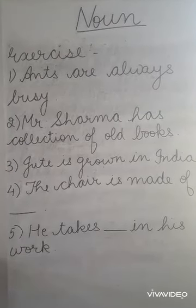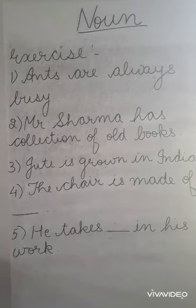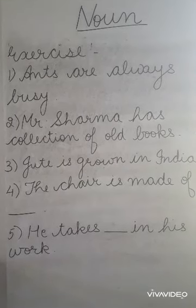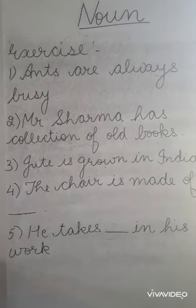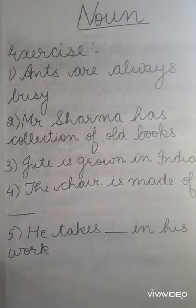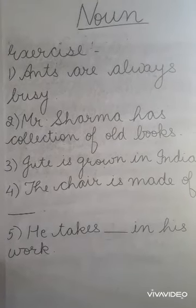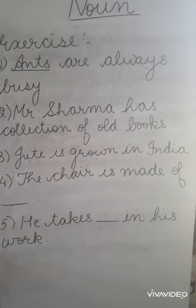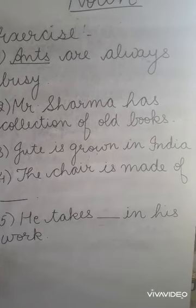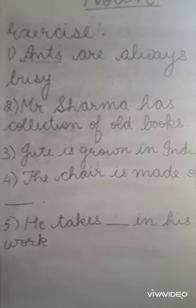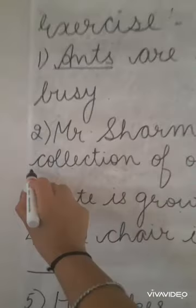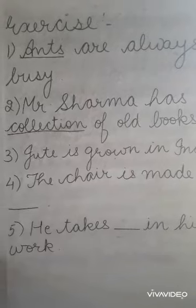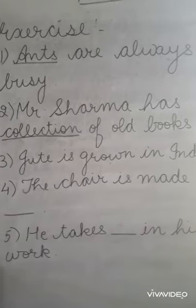To make nouns more clear, here is one exercise. First: 'Ants are always busy.' In this, ants are a noun because it is the name of an animal. Second: 'Mr. Sharma has a collection of old books.' In this, collection is a collective noun because it is talking about a bunch of books.